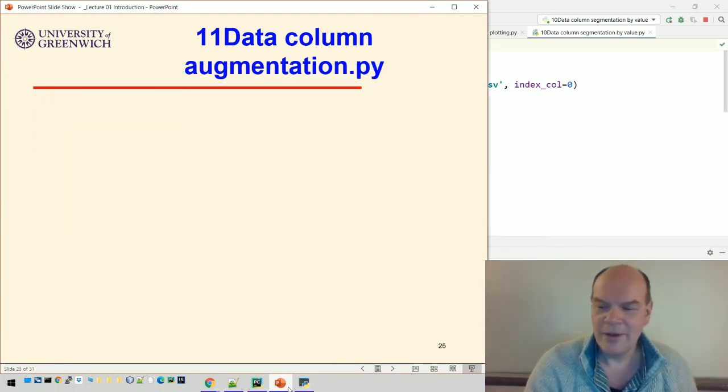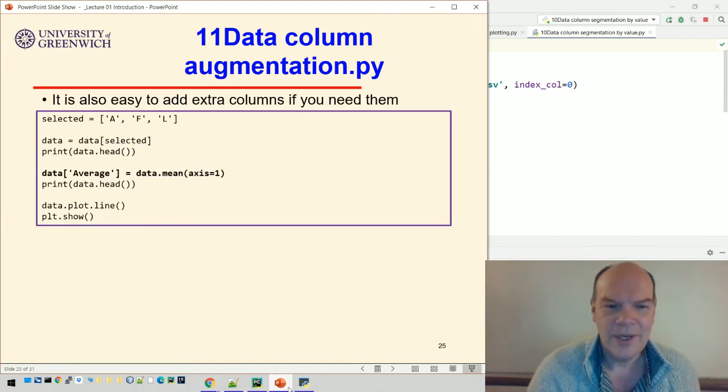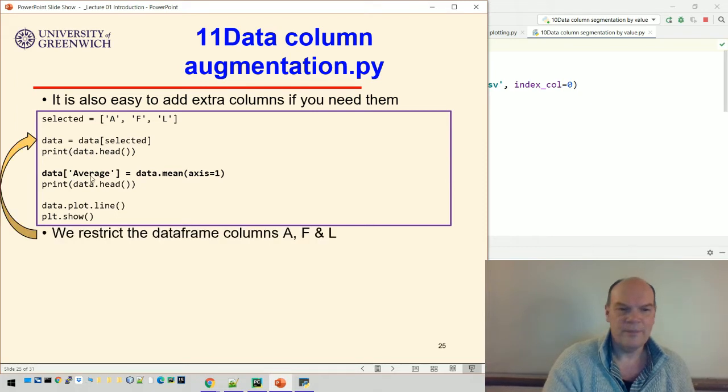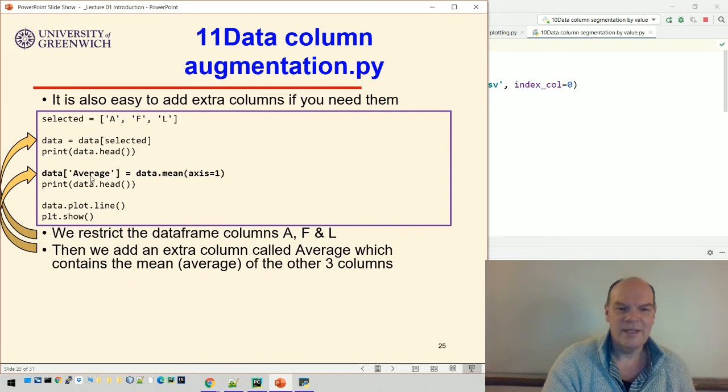What else can we do with our columns apart from segmenting? We can also add columns to our data frame. So here we've taken the data, we've selected the three columns, the three high selling columns, and then we've created another column. So what this line here is doing, let's say we restricted the data to just those three columns. This line adds an extra column called average. So we've got four columns now called A, F, L, and average, and that takes the average of the other three columns.